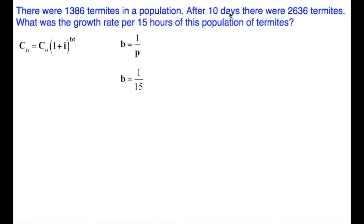10 days, 24 hours a day, 24 times 10, 240. Our time is 240 hours and our period is in hours, 15 hours. We're going to multiply these two together. So 1/15 times 240, which gives us 240 over 15, or 240 divided by 15, which is 16.